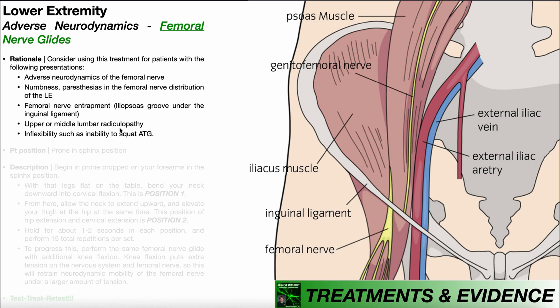Generally, if we're looking at nerve roots L2, L3, sometimes L4, those radiculopathies may manifest with symptoms in the front of the thigh. As you go below that into the lower lumbar spine and even the sacral nerve roots, those are going to be more on the back of the thigh. So if it's upper or middle lumbar radiculopathy presenting with symptoms in the front of the thigh, that's an indication for a femoral nerve glide.